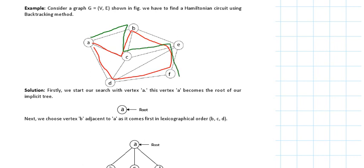So one solution is: A → C → B → E → F → D → A. This is a possible solution. Another solution is: A → D → F → E → C → B → A. So there are three possible solutions for this graph. Thank you, guys.